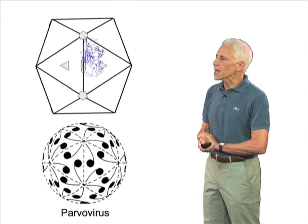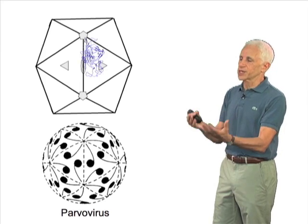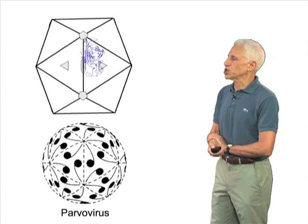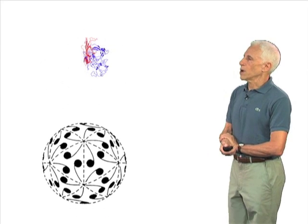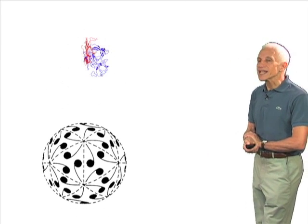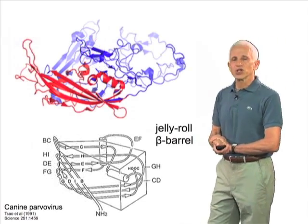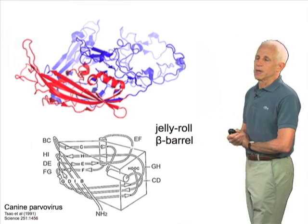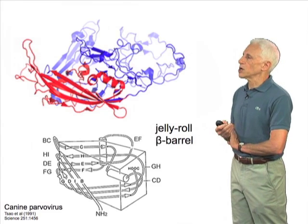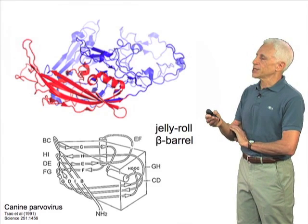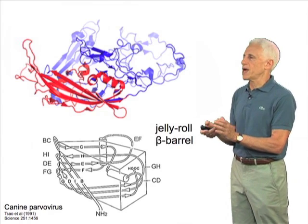60 of them assemble into that shell, as suggested here. Taking a slightly closer look at that protein subunit in a traditional ribbon diagram representing the fold of the polypeptide chain, you see that it's based on a quite simple compact domain.